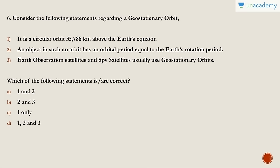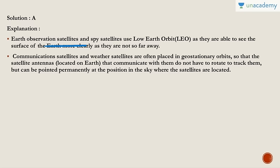Question six: Consider the following statements regarding geostationary orbit. It is a circular orbit 36,000 kilometers above the Earth's equator; an object in such an orbit has an orbital period equal to Earth's rotation period; and Earth observation satellites and spy satellites usually use geostationary orbits. The first and second statements are correct, but the third is wrong. Spy satellites always use low Earth orbit so they can see the surface clearly — from 36,000 kilometers you cannot observe surface detail effectively. Earth observation and spy satellites use low Earth orbit to see the surface more clearly.